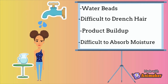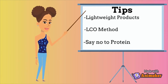Caring for low porosity hair can be tricky, but here are a few tips. You want to use lightweight products because they'll absorb into the hair easier, whereas heavy products will only sit on top of your hair and flake when dry. You also want to use the LCO method — leave-in conditioner, cream, and oil. This method allows you to coat your hair with layers of moisture with your leave-in conditioner and curling cream, then seal that moisture in with oil.